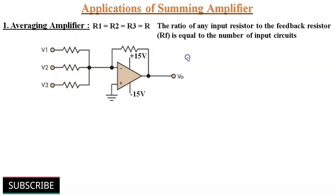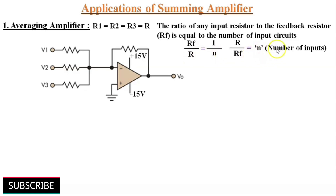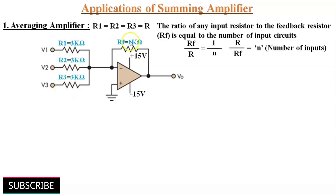We can say RF/R is equal to 1/N, or R/RF is equal to N, where N denotes the number of inputs. Then the summing amplifier acts as an averaging amplifier. Here all the input resistors are of equal value of 3 kilo ohms and the feedback resistor is 1 kilo ohm. So the ratio of input resistors to the feedback resistor is 3, which equals the number of inputs of 3.